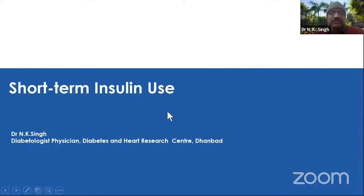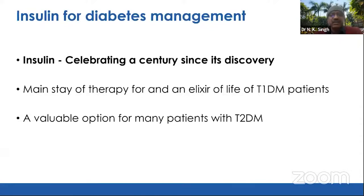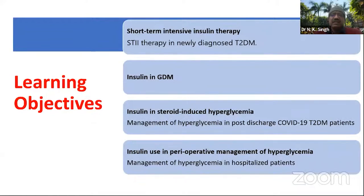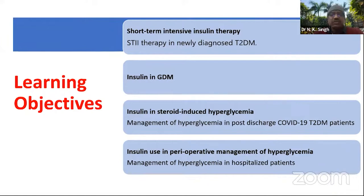Insulin — we have a great journey, which we are celebrating now, a century since its discovery. There is nothing to say that the main stage of therapy in type 1 diabetes is insulin, insulin, and insulin. But many times it is also an available option for many patients with type 2 diabetes. Our learning objectives will be the unique concept of short-term therapy in newly diagnosed cases, now known as STIIT — the short-term intensive insulin therapy. We have already had lots of discussion on GDM, where again it is a short-term therapy.